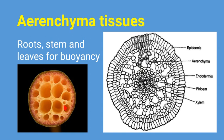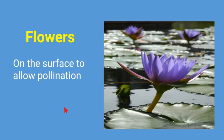These aerenchyma tissues, or air sacs filled with air, help the hydrophytes to float on the surface of the water. Flowers on the surface are very conspicuous, prominently and beautifully colored, and they allow pollination. So flowers are the organs of pollination in hydrophytes.